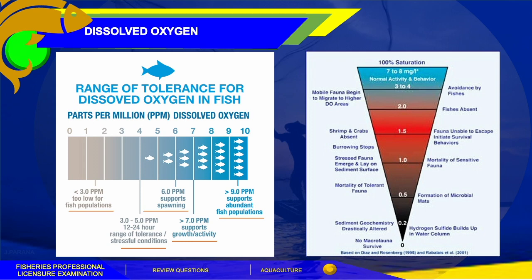A DO of 7–8 mg per liter is normal for activity and behavior of all organisms based on DS and Rosenberg 1995 and Rabaláes et al. 2001. The concentration of dissolved oxygen in ocean water is typically between 7 and 8 mg per liter. If concentration falls below 4 mg per liter, organisms will begin to react, with mobile forms avoiding or migrating out of the area. Waters with less than 0.2 mg per liter dissolved oxygen are called anoxic, and waters with no measurable dissolved oxygen are called hypoxic.